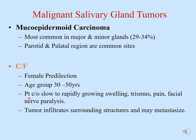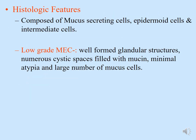Clinical features: mucoepidermoid carcinoma has a female predilection, affecting the age group 30 to 50 years. Patients usually complain of a slow to rapidly growing swelling, trismus (difficulty in mouth opening), pain, and facial nerve paralysis. Whenever a patient with a salivary gland swelling complains of facial nerve paralysis, we must suspect malignancy. The tumor infiltrates surrounding structures and may metastasize.